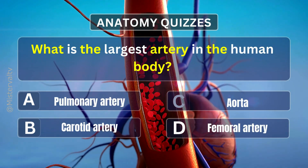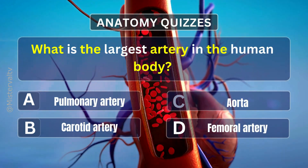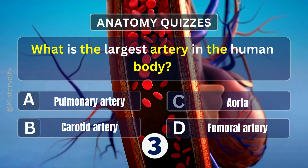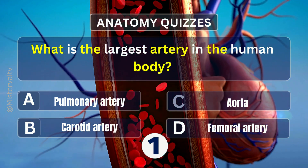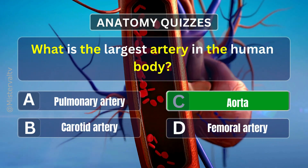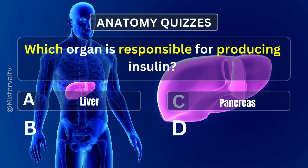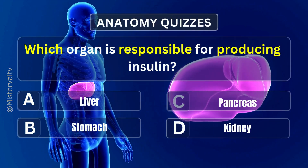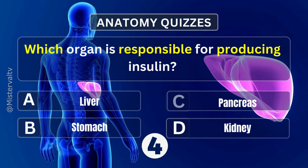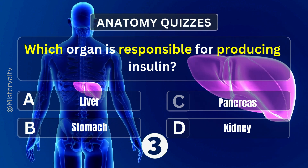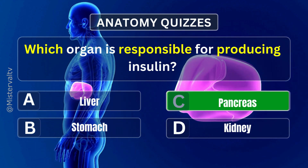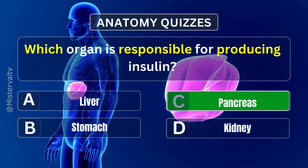What is the largest artery in the human body? Answer. C. Aorta. Which organ is responsible for producing insulin? Answer. C. Pancreas.